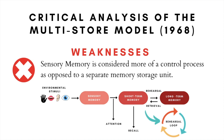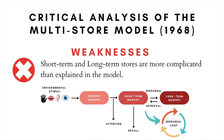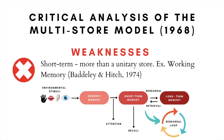Later revisions of this model addressed these claims and incorporated the sensory register within the short-term store instead of including sensory memory as a separate unit altogether. Additionally, it has become apparent that both short-term and long-term memory are far more complicated than previously explained by this model. Short-term memory, for example, is more than just a unitary store. The working memory model proposed by Baddeley and Hitch in 1974 proved this by showing that short-term memory comprises different components, such as the central executive, the visuospatial sketchpad, and the auditory loop.